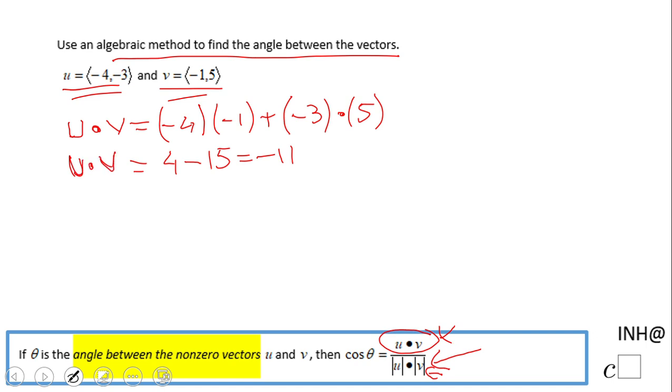Now we're gonna calculate the magnitude of each vector. The magnitude of u is square root of negative 4 squared plus negative 3 squared, which is 16 plus 9, square root of 25, which is 5.